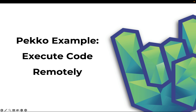Hey everyone, this is Daniel for Rock the JVM. In this video I'm going to demonstrate an example of Apache Peko features with a little project that can execute code remotely. It's a distributed system where you can send in a piece of code as a string, and the distributed system executes that code in any language that is supported by the project and gives you back the result.